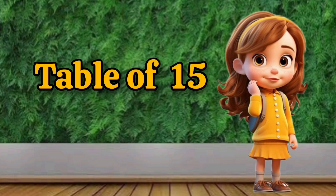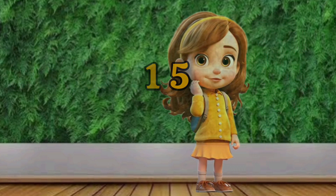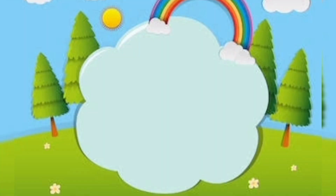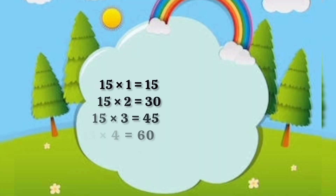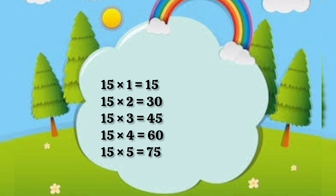Table of 15. 15 1s are 15, 15 2s are 30, 15 3s are 45, 15 4s are 60, 15 5s are 75.